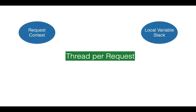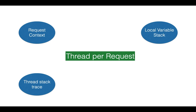It provides a local variable stack. In case of an error, we can look at the thread stack trace to debug. The profiler can look at the thread to build the profile. So it's definitely useful and also equates Java's unit of concurrency — platform threads — to the OS's unit of concurrency, the OS threads.